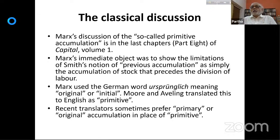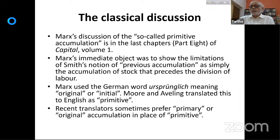Marx used the German word 'ursprünglich,' which essentially means 'original,' referring to Smith's previous accumulation. Marx was writing in German, and this word effectively means 'original' or 'initial.' When Moore and Samuel Moore and Edward Aveling translated Capital Volume One into English — this was 1882 — they translated this word as 'primitive.' That translation has stuck in English-language discussions. Some recent translators prefer 'primary' or 'original,' which is more accurate, but 'primitive accumulation' is still the currently used term.